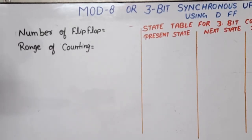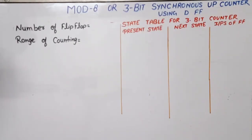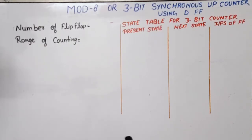Hello everyone. In this video lecture of digital electronics or digital system design, I am going to design a Mod 8 or 3-bit synchronous up counter using D flip-flop. I have already uploaded designs using JK and T flip-flops — links are in the description box. In this video I will design using D flip-flop. If we have any counter design, we need to know how many flip-flops are required. Since this is a 3-bit synchronous up counter, 3-bit means 3 flip-flops, because one flip-flop can store one bit.